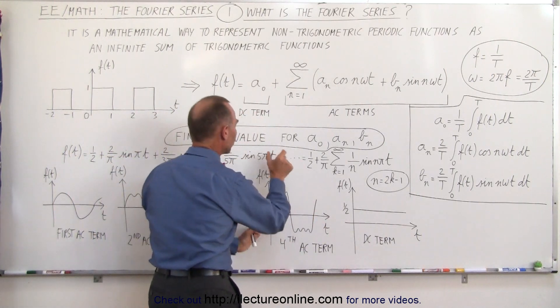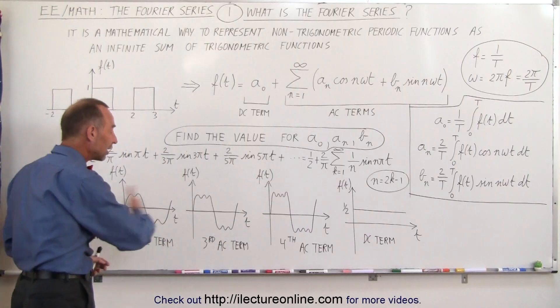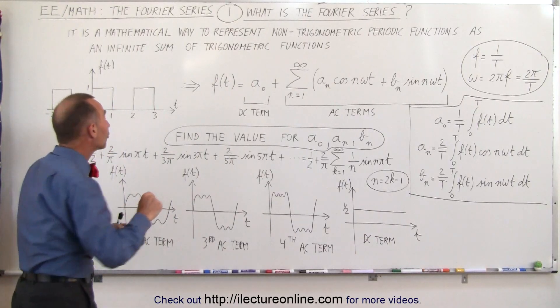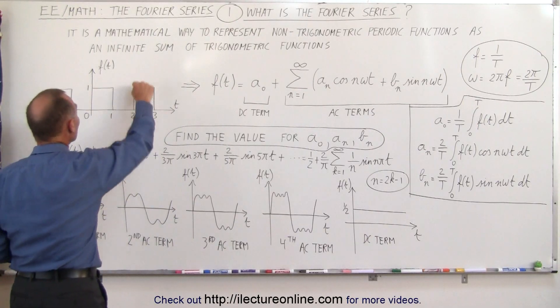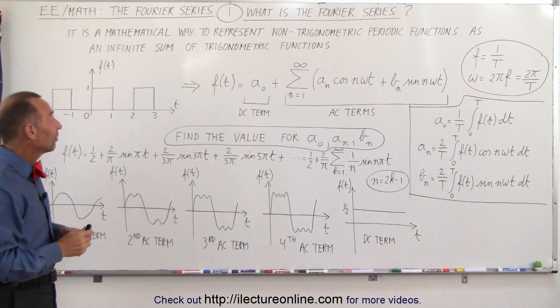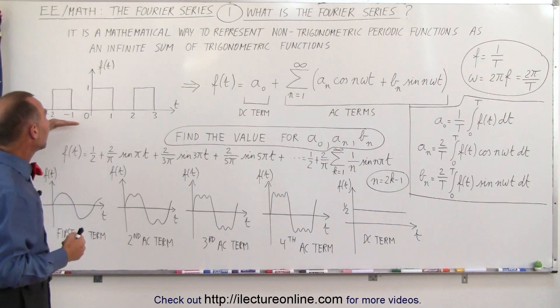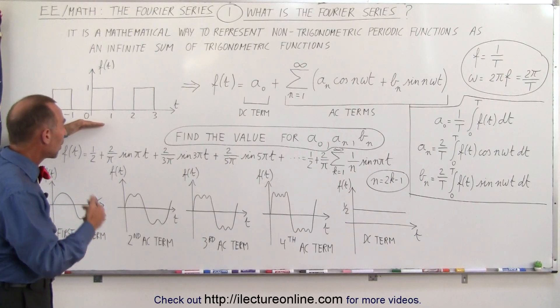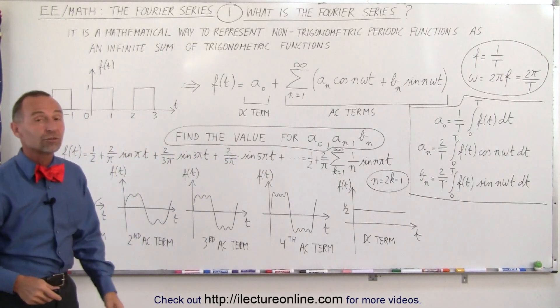The fourth AC term, which is this term, and if we continue to add up all these terms together, we end up with something that looks very much like this periodic square wave function. So it's interesting that we can actually represent a periodic square wave function as the sum of these trigonometric functions.